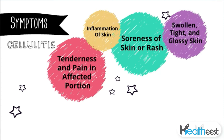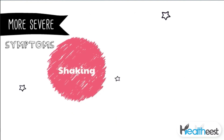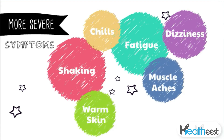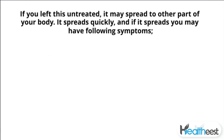Generally, the symptoms of this bacterial infection are: tenderness and pain in the affected area, inflammation of the skin, soreness of skin or rash, swollen, tight and glossy skin, hot affected area, and abscess with pus. Sometimes fever. If you have more severe cellulitis, symptoms may include shaking, chills, fatigue, dizziness, muscle aches, warm skin, and sweating.